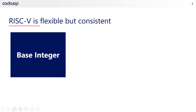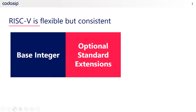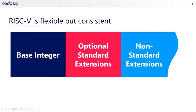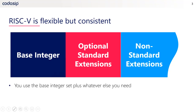The second thing is RISC-V is flexible. There is a very small base integer ISA which has to be there, but then you have optional standard extensions. And RISC-V even allows for custom extensions, which you could say are non-standard. So you only need to use the base integer set plus whatever else you need, and nothing more than that.